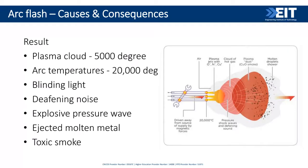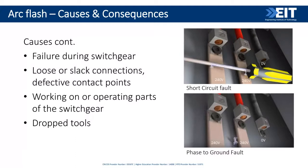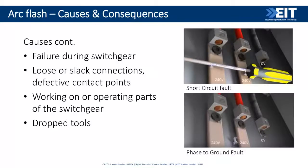It's important to point out there are three types of causes: something resulting from human error — a dropped tool; something resulting from poor maintenance — where you've got dust buildup or animals; or sometimes you just have catastrophic failure of your switchgear. So there are three different categories.